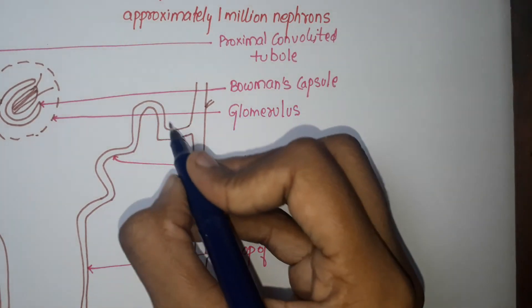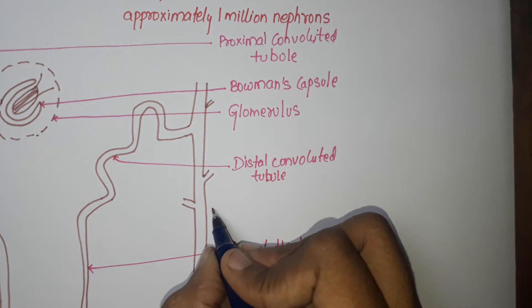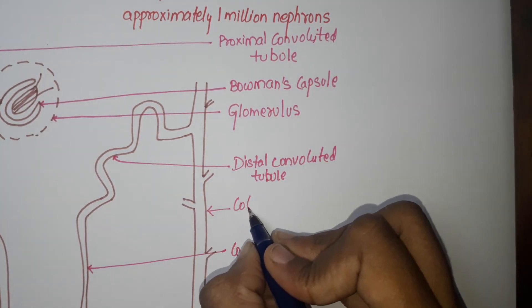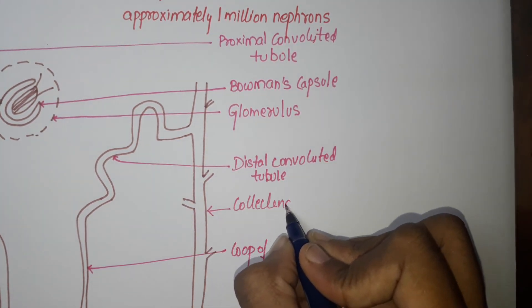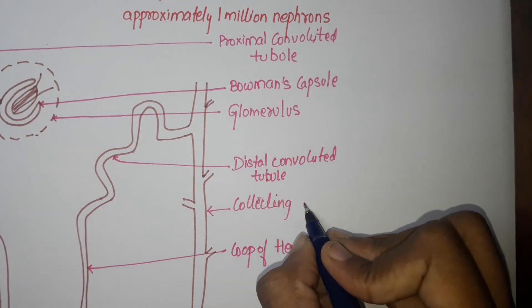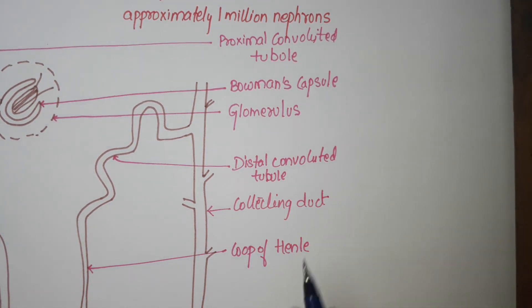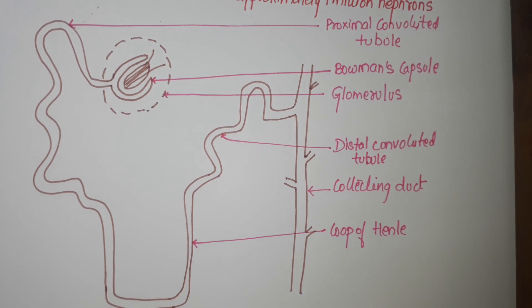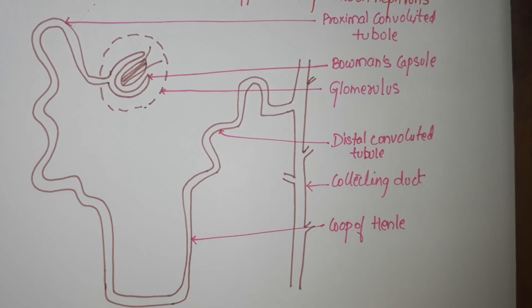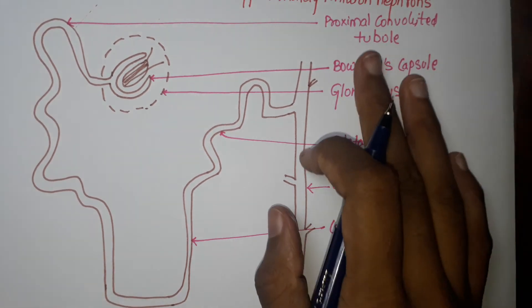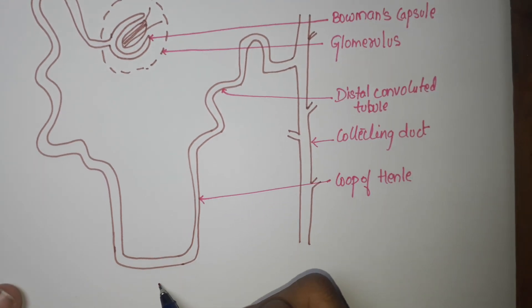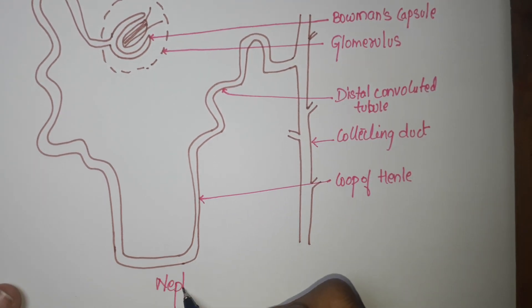Now this one is the collecting duct. So this is the structure of nephron and these are the labelings. Now I think you all know how to draw the structure of nephron.